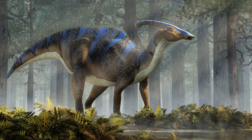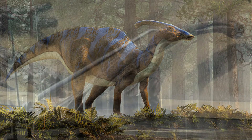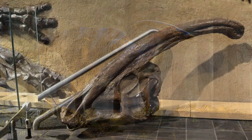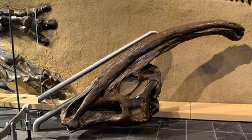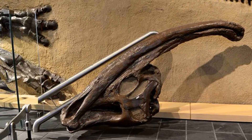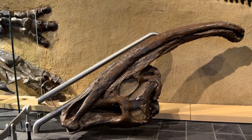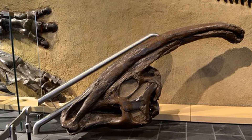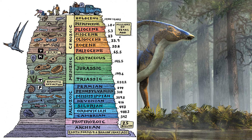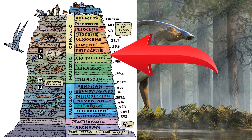Alright, let's get started. The history of Ingen's Parasaurolophus begins in the year 1920 when a skull and some partial fragments were discovered along the Red Deer River in what is now known as the Dinosaur Park Formation. Parasaurolophus comes from the Campanian age of the upper Cretaceous period and resided in western North America.